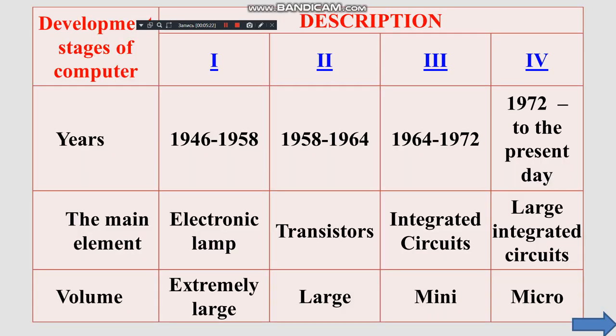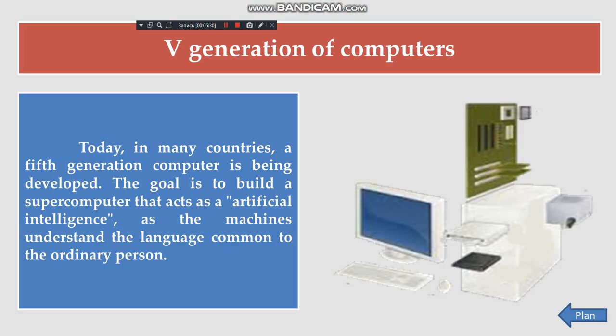In the development stages of computers, there are multiple generations, with the main element varying across each era. Today, in many countries, a fifth-generation computer is being developed. The goal is to build a supercomputer that acts as artificial intelligence, where machines understand the language common to ordinary people.